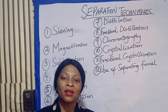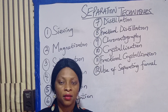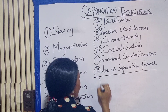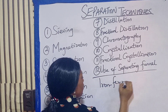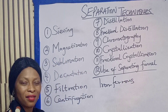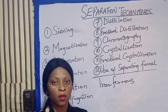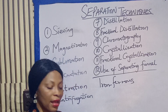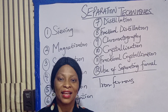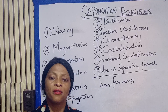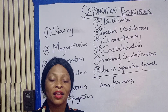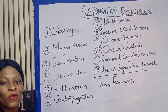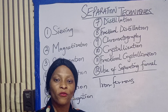Number two is magnetization. Magnetization is used to separate non-iron substances from iron substances, or ferrous substances from non-ferrous substances — 'ferrous' being another word for iron. For example, if you have a mixture of iron filings and sulfur, or iron filings mixed with sand, all you need to do is get a magnet, pass it over the mixture, and all the iron will attach itself to the magnet, leaving your sand or sulfur behind.